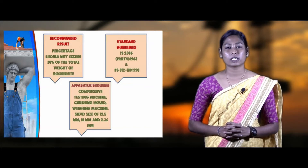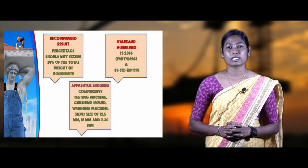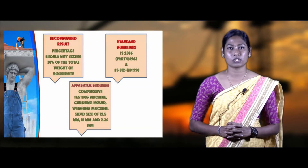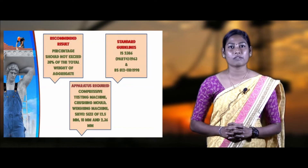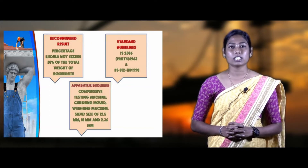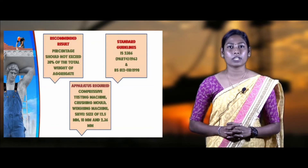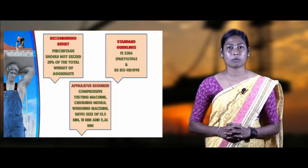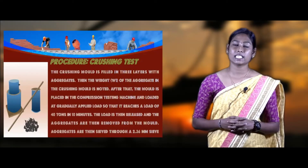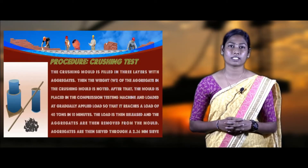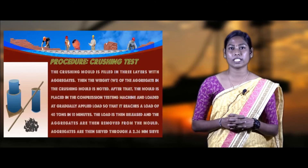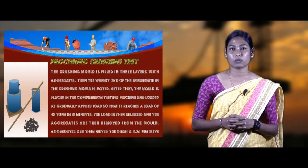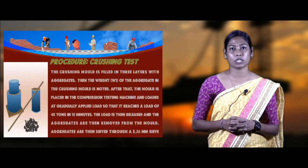The apparatus used to determine the crushing strength test includes a compression testing machine, sieves of sizes 12.5 mm, 10 mm, and 2.36 mm, a weighing machine, and a cylindrical mold of 15 cm diameter with a plunger and base plate. The procedure: take a sample of aggregates passing through 12.5 mm sieve and retained on 10 mm sieve, and weigh it — taken as W1.